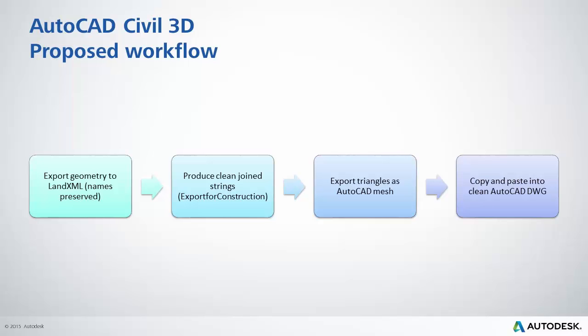For a fully working workflow, this is a method we can look to try. Export our geometry to LandXML, as alignments and profiles work natively with all survey equipment, and we can retain the names used within your design. We're going to look at this bonus tool added in the country kit called Export for Construction, which will create clean join strings. Also, if we export our surfaces to plain triangles, that mesh natively will work inside most survey equipment — you do not need to construct an object as such. For all of this, copy and paste the output into a clean DWG so you don't have any leftovers from your work-in-progress Civil 3D model file.